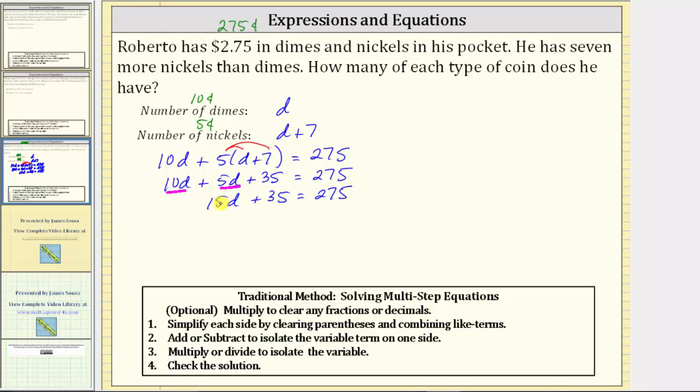To isolate 15d, we need to undo plus 35 by subtracting 35 on both sides of the equation. Simplifying 35 minus 35 equals zero, which is why we subtracted 35 on both sides. The left side simplifies to 15d. And then we have equals on the right side, 275 minus 35 equals 240.